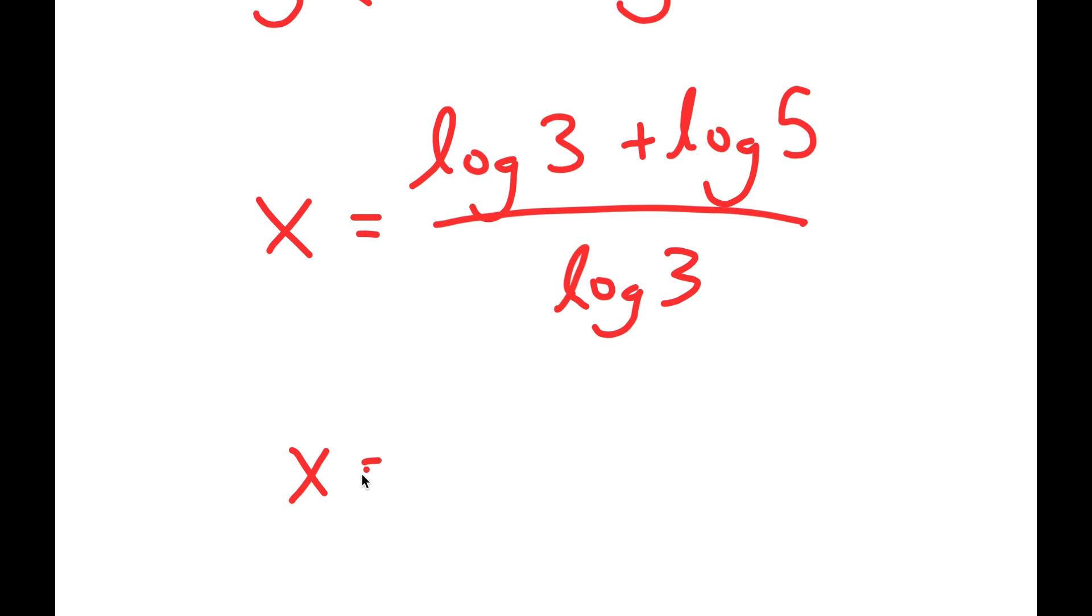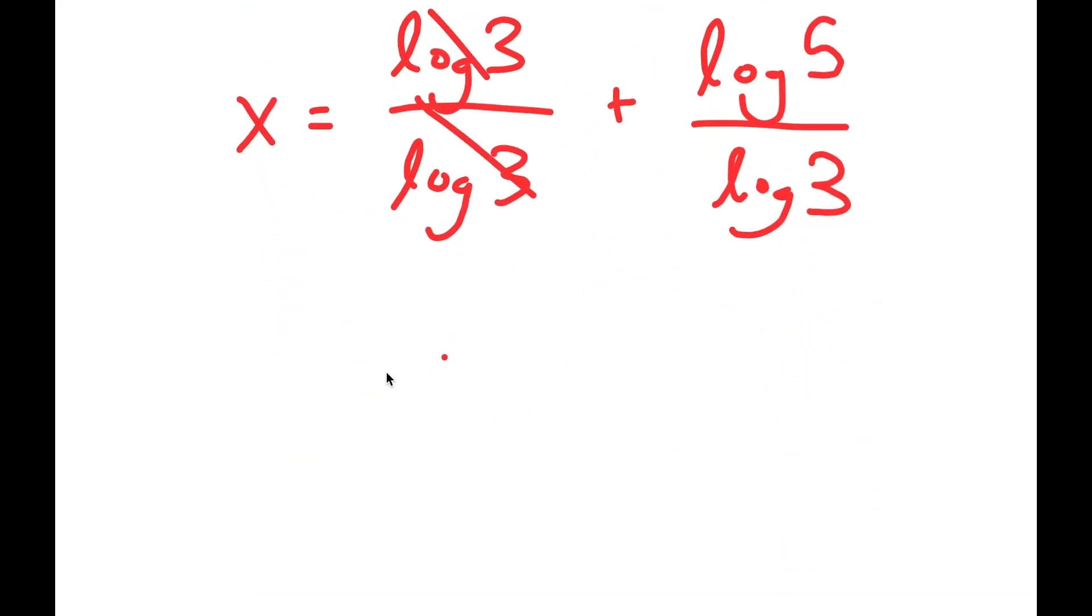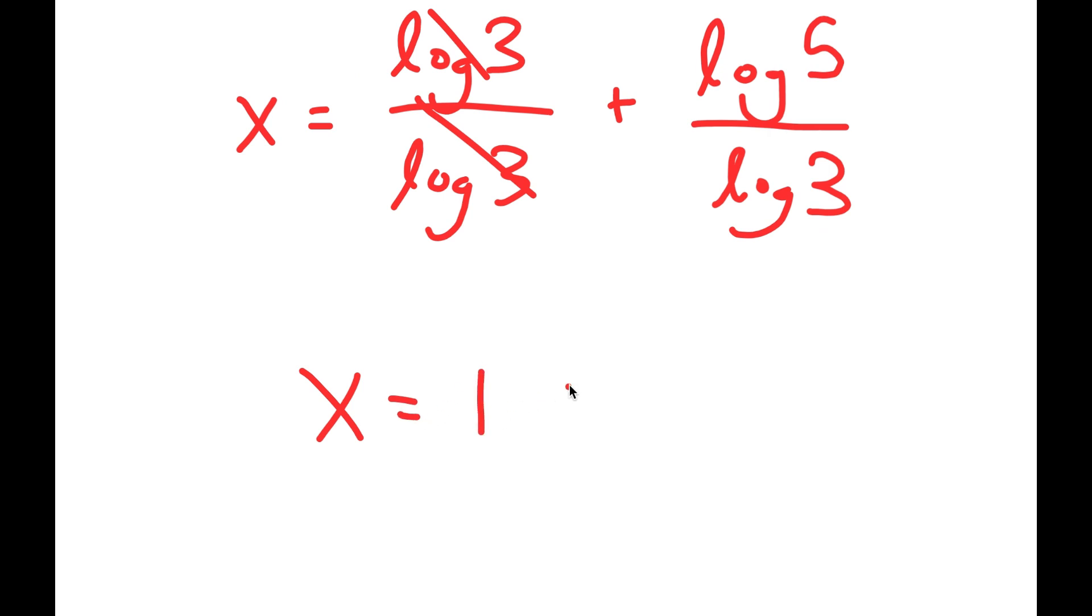And this is the same thing as log 3 over log 3 plus log 5 over log 3. So log 3 and log 3, these two cancel out, so I get x is equal to 1 plus log 5 over log 3.